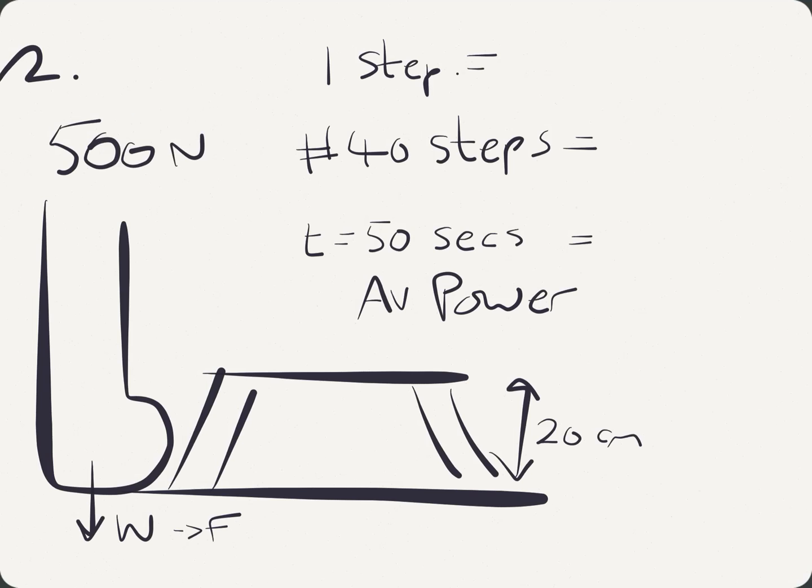Right, so let's give it a go. One step is going to be force times distance. 500 times 0.2. Don't get caught out with that unit. Well, 0.1 of 500 is 50, so 0.2 of 500 is 100.